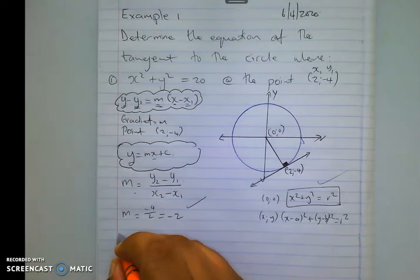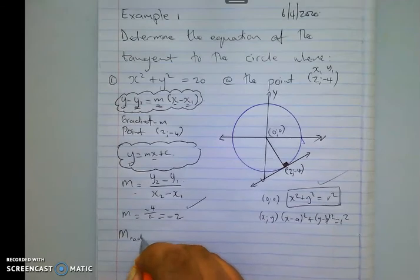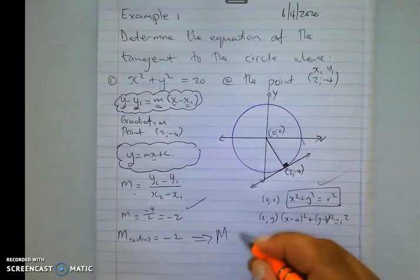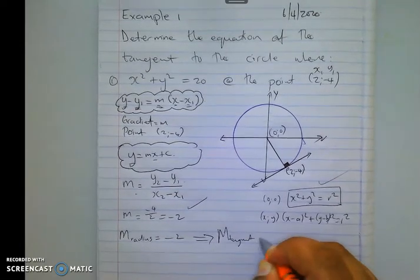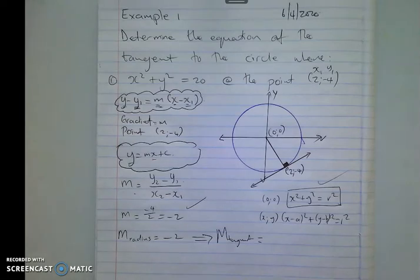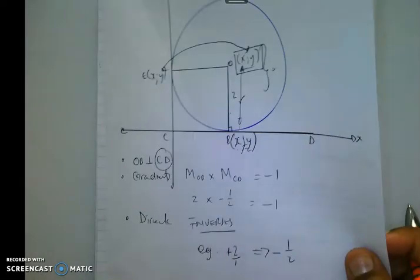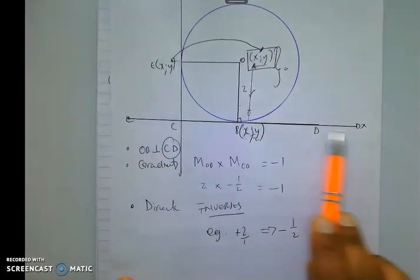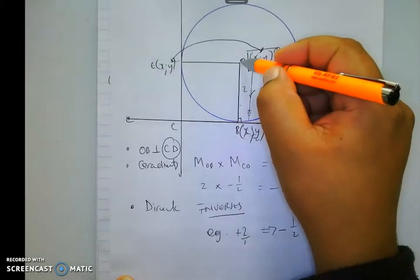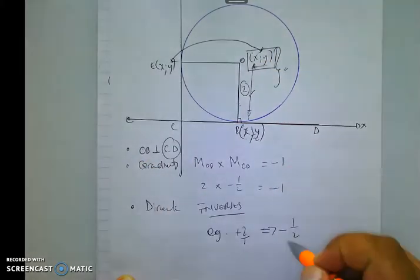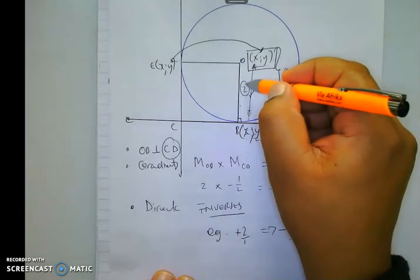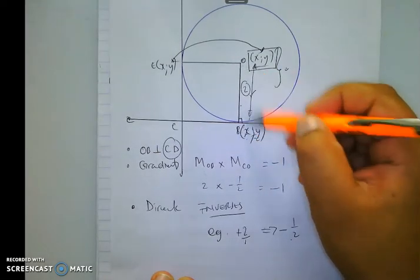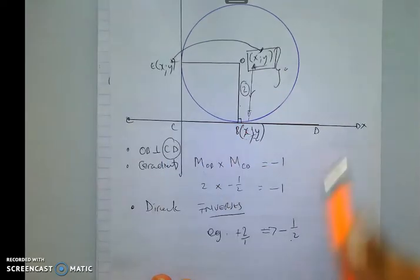Now that I know that the gradient of my radius is -2, the question I have for you is, what would be the gradient of your tangent? Keeping in mind, as I mentioned earlier, I spoke about direct inverses. If that line is perpendicular to this line, it means that if this gradient is 2, this gradient would be -1/2. Because my gradient of my horizontal line is the direct inverse of my vertical line. My vertical line is the direct inverse of my horizontal line. Keep that in mind.